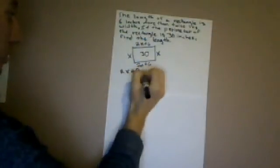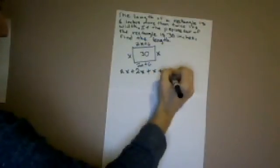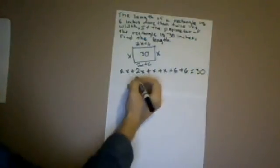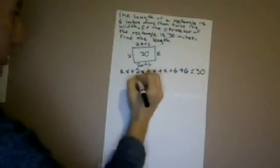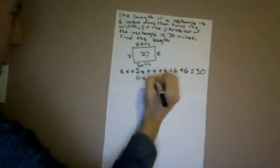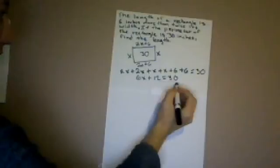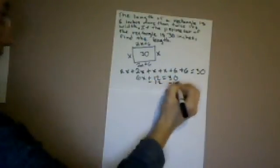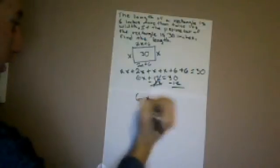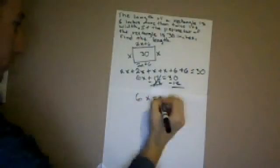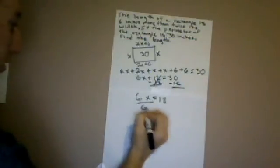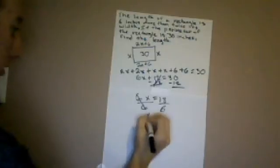Next we would add all these together to find the perimeter, which equals 30. We would go 2x plus 2x plus x plus x plus 6 plus 6. If we add all these together, it will equal 30. And that will be 6x plus 12 equals 30. Next we'll minus 12 on both sides. That will be 6x equals 18. Then you divide 6 on both sides to find x. x is equal to 3.